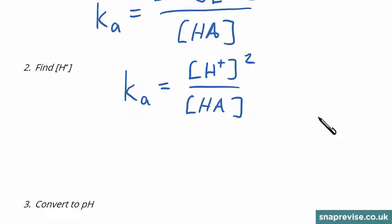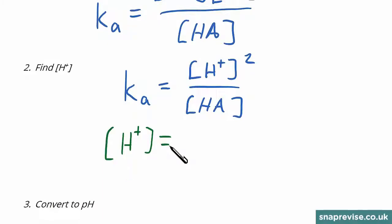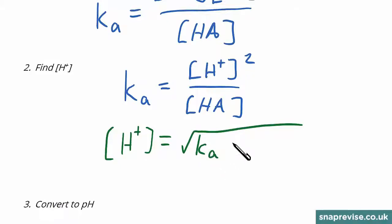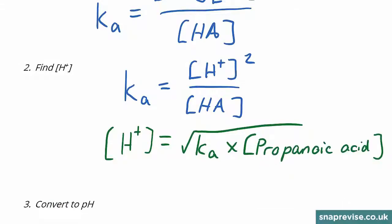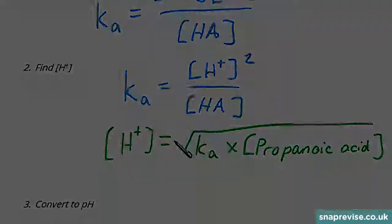We can rearrange this expression to find that the concentration of H plus is given by the square root of the acid dissociation constant multiplied by the concentration of the acid present — in this instance, the propanoic acid. It is in fact easier to just remember this expression.